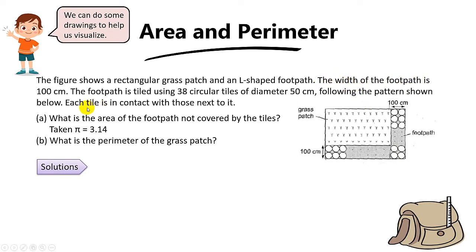The width of the footpath is 100 cm. The footpath is tiled using 38 circular tiles of diameter 50 cm, because 50 plus 50 will give you 100 cm. The tiles follow this pattern, and each tile is in contact with those next to it.